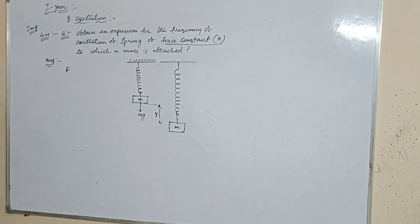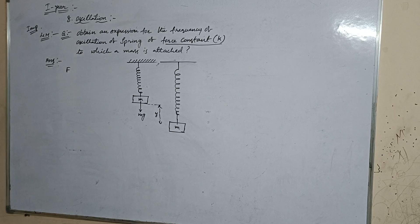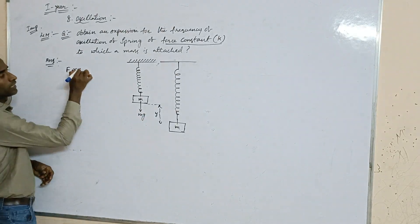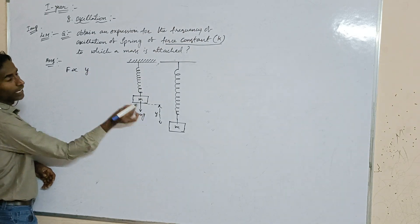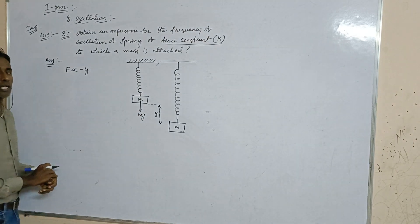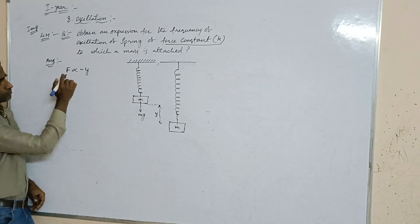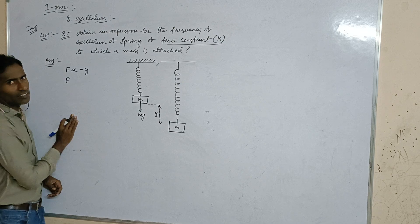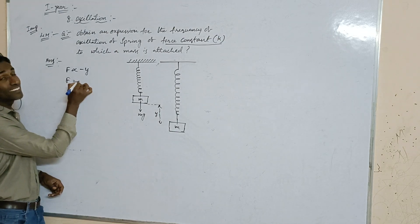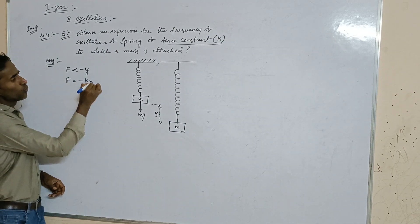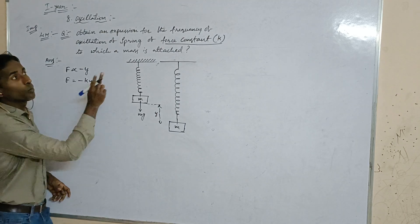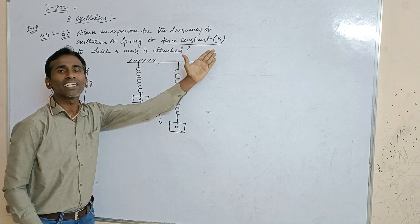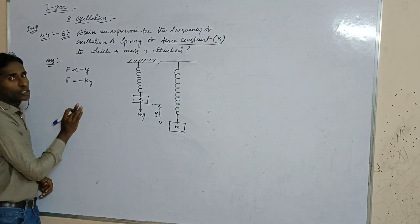The restoring force developed in the spring is: F is directly proportional to displacement in the opposite direction, that is, F is directly proportional to minus y. Removing the proportionality gives a constant k, so F equals minus k times y. Here k is the proportionality constant called the force constant of a spring.